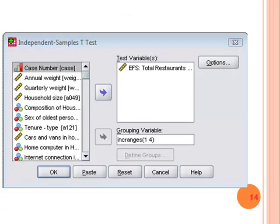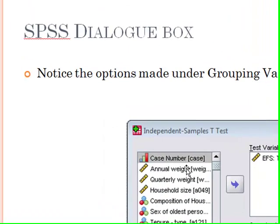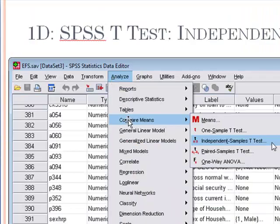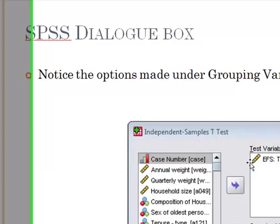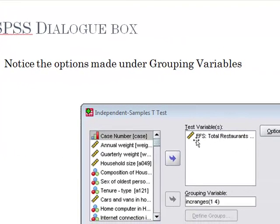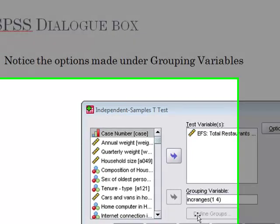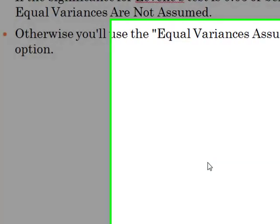The SPSS command for this is the independent sample t-test. You say analyze compare means independent sample t-test. You select the variable EFS and under the grouping variable I have used the income ranges 1 and 4 because we are interested in the highest and the lowest quartile. We divide the income ranges into lowest, low, high and highest quartile and 1 and 4 represent the extremes.